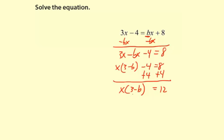Okay, now we're going to see the payoff for this distributive property step. We're going to divide both sides by 3 minus b to eliminate and get the x by itself. So x equals 12 over 3 minus b.